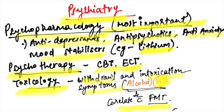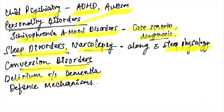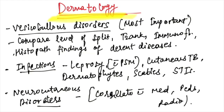Also revise child psychiatry — ADHD, autism, and related conditions — and personality disorders. For psychopathology and mood disorders, focus on case-scenario-based diagnosis using a clinical approach. Revise sleep disorders including narcolepsy along with sleep physiology. Also cover conversion disorders, delirium versus dementia, and defense mechanisms — all are key last-minute psychiatry topics.